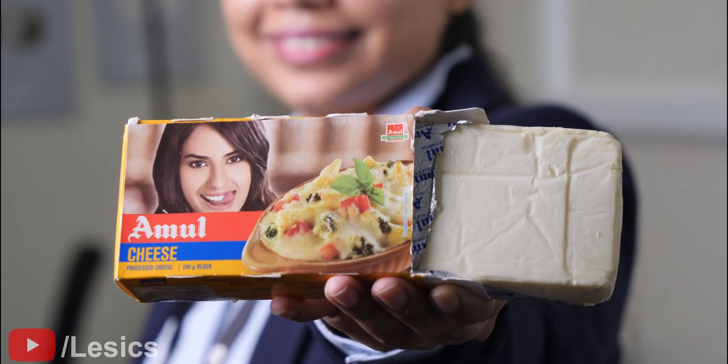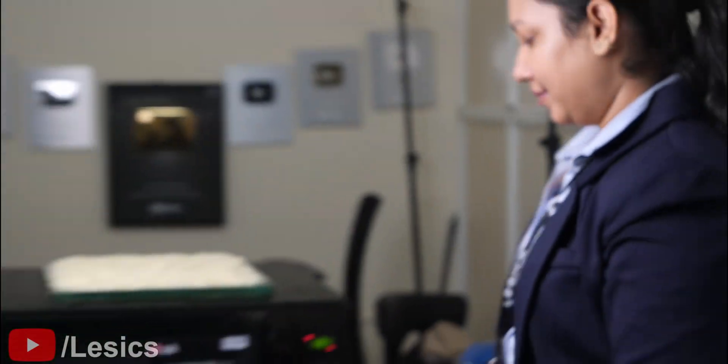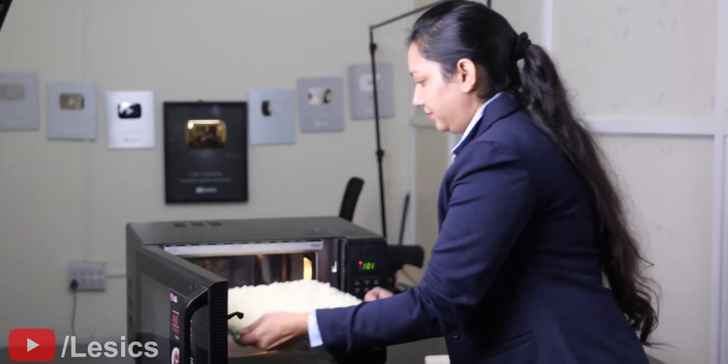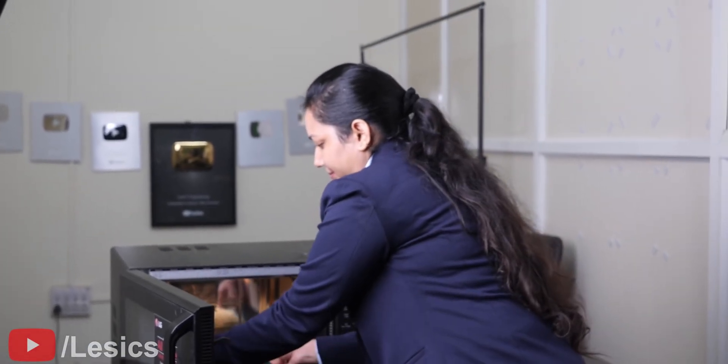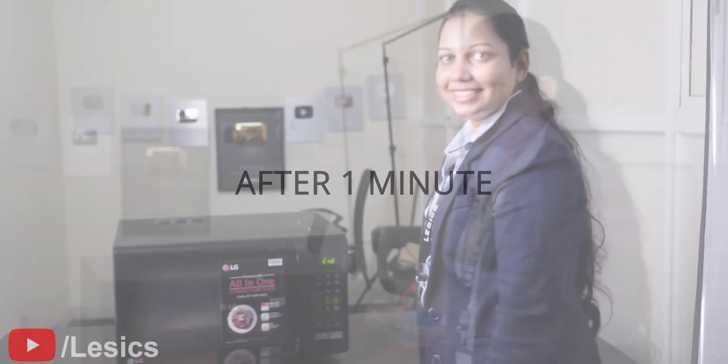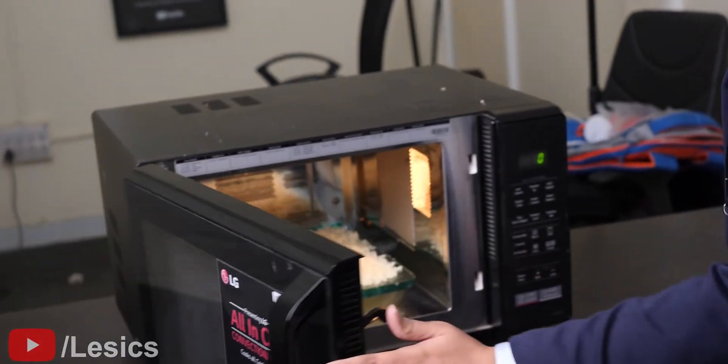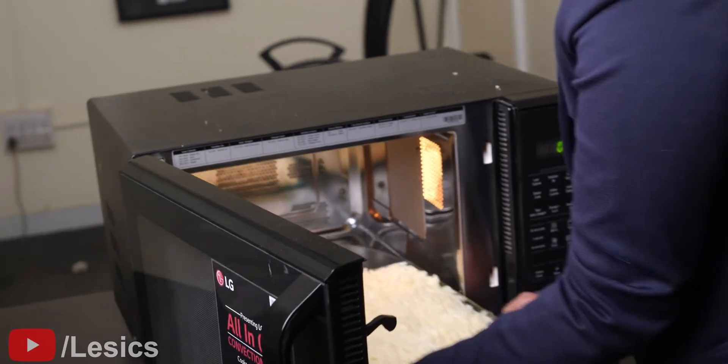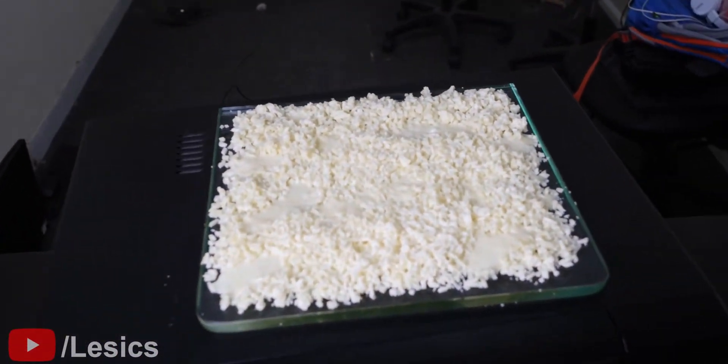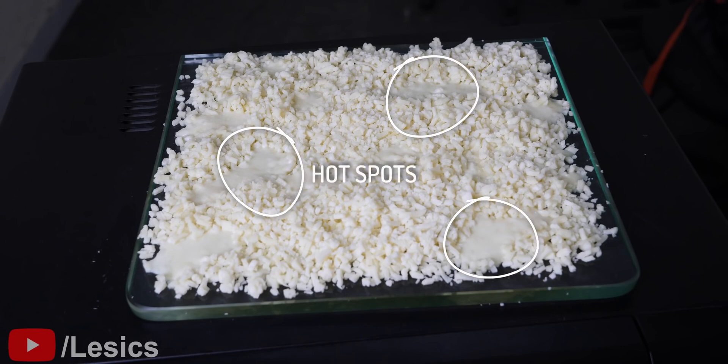Using cheese, you can demonstrate these cold and hot spots of your kitchen's microwave oven. Just keep the shredded cheese inside your microwave oven for one minute. What you see after one minute is the cheese surface with a few hot spots. The presence of such hot spots causes a microwave to cook food unevenly.